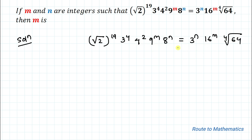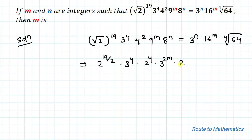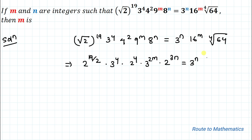From the equation, one thing you can notice is that all the terms are multiples of 2 and 3. So let's convert this equation in terms of 2 and 3. √2 means 2 to the power 1/2, so that becomes 2 to the power 19/2, multiplied with 3 to the power 4. Then 4 squared is 2 to the power 2, so this becomes 2 to the power 4. And 9 to the power m can be written as 3 to the power 2m, and 8 to the power n can be written as 2 to the power 3n.